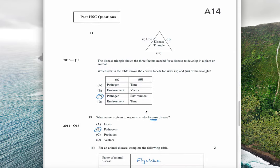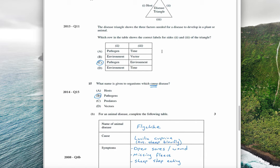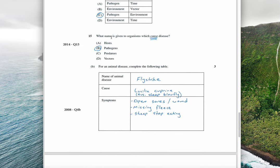Moving on to exam questions. In 2015, the question asked about the components of the disease triangle: host, pest, and environment — noting that pathogen is another word for pest. Time and vector are not components of the disease triangle, so pathogen and environment are the two correct answers. In 2014, the question asked what name is given to organisms that cause disease — the answer is pathogen. Vectors pass on a disease but don't cause it; pathogens are the things themselves that cause the disease, in this case Lucilia cuprina.